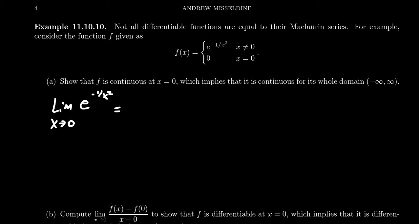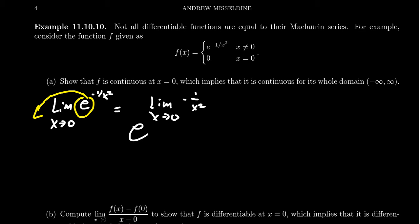Because the exponential is a continuous function, we can actually pull it out of the limit process. So we end up with e raised to the limit as x approaches zero of negative one over x squared. As x approaches zero, one over x squared is going to approach positive infinity — it doesn't matter which side you approach from, because you're squaring things, you end up with positive infinity.